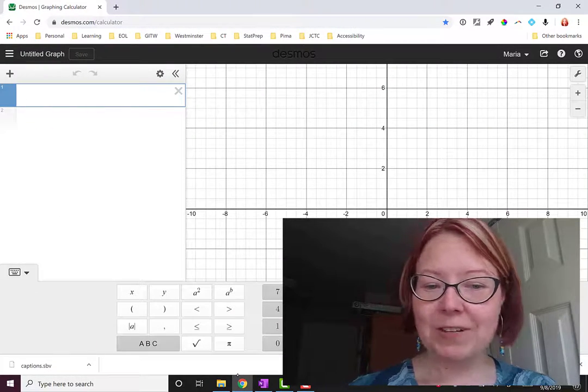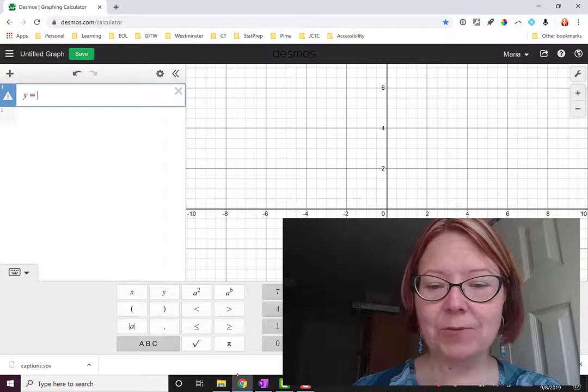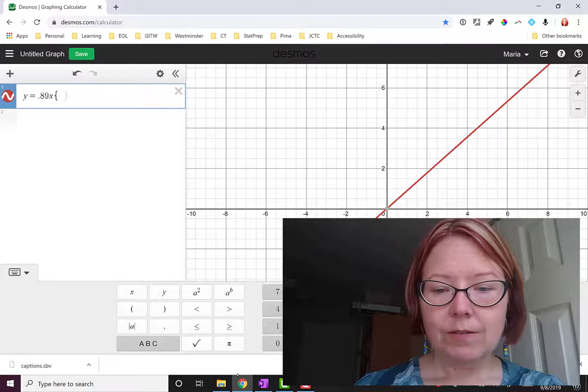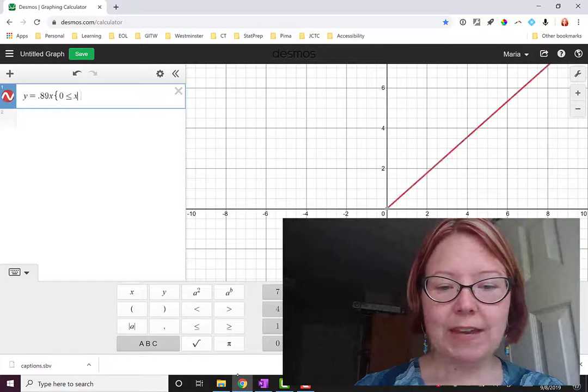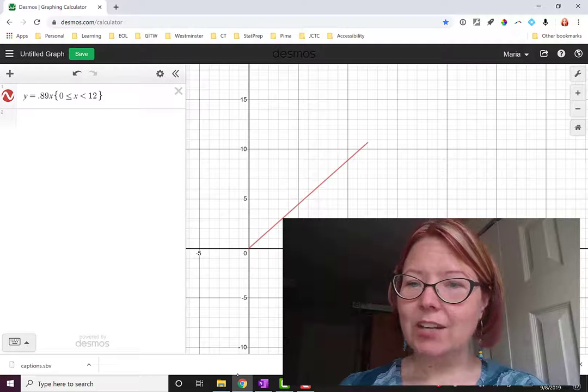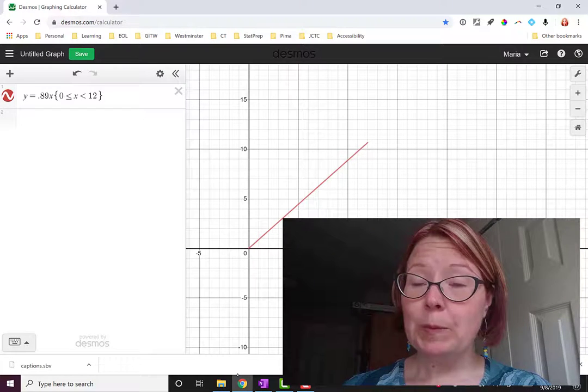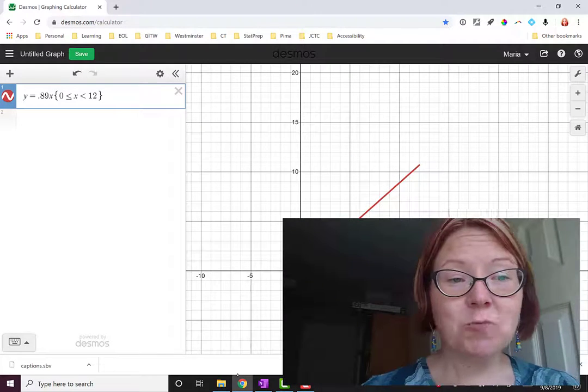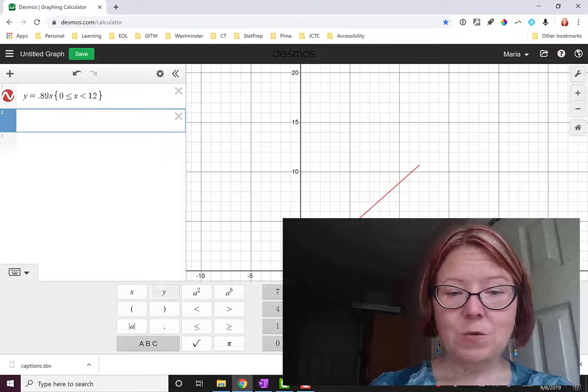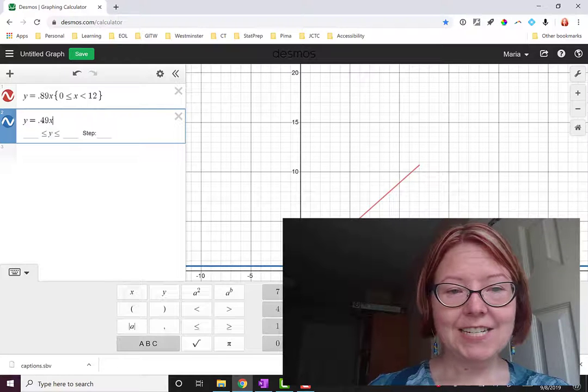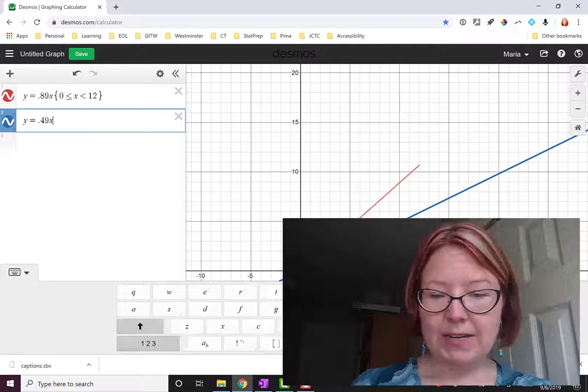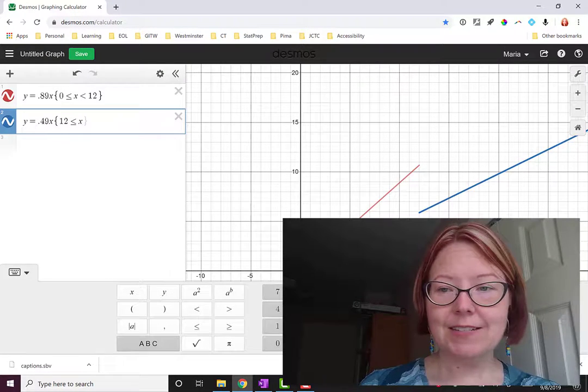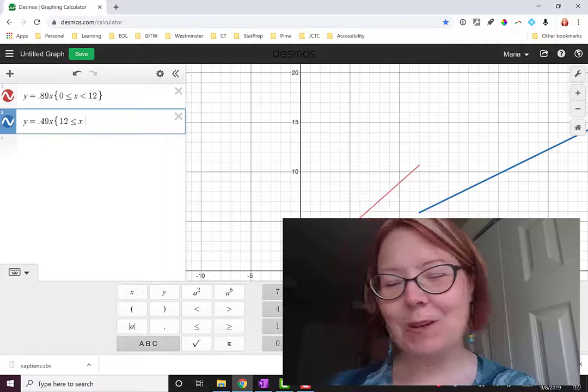And we're back. I'm over in Desmos and I'm going to graph Y equals 0.89X. And then I'm going to use the curly braces: 0 is less than or equal to X is less than 12. That gives me the graph for how much I will pay total for corn between 0 and 12 cans of corn. Now let's enter the price for more than 12. That will be Y equals 0.49X. And then we'll use the curly braces to indicate our domain, which will be 12 is less than or equal to X.